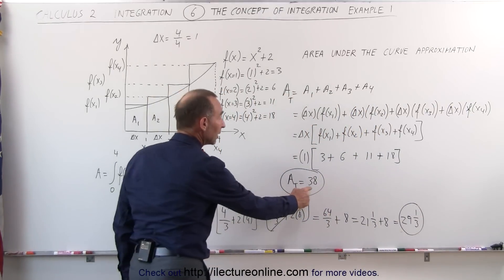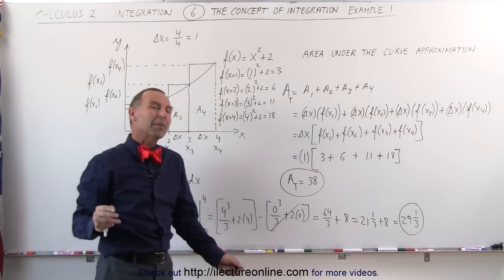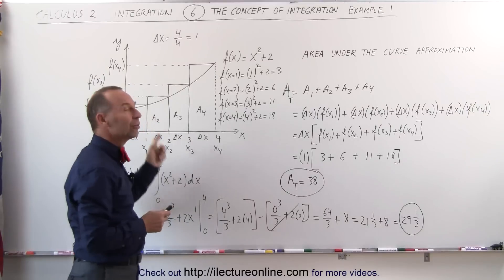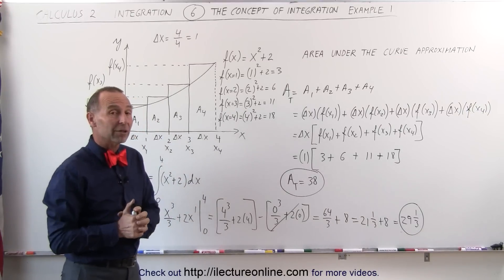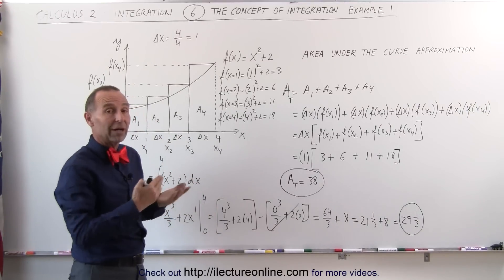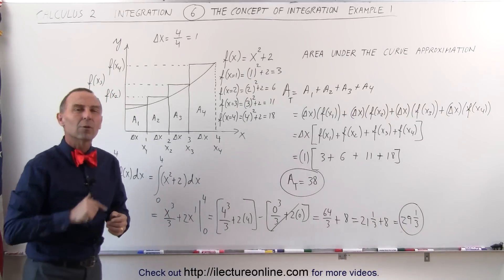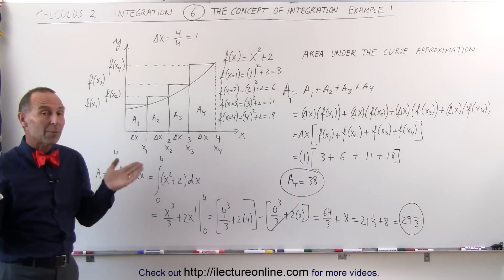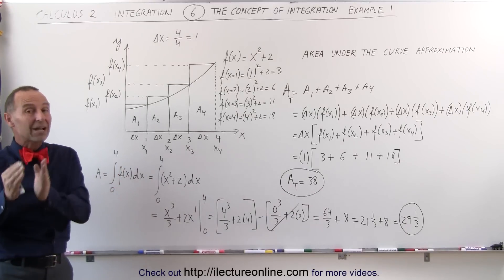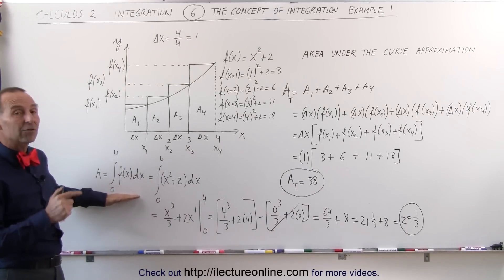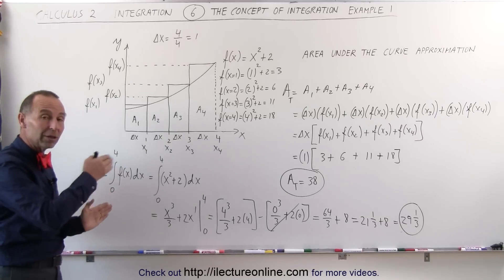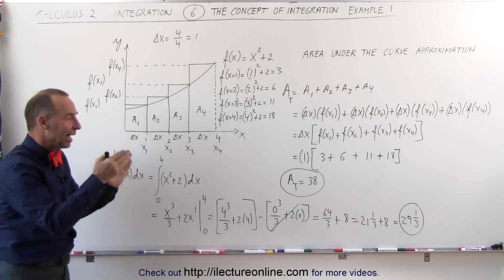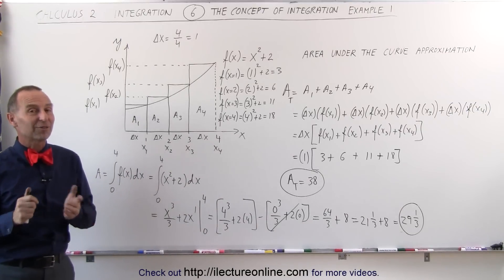The actual area using integration is 29⅓. Notice the approximated area, 38, isn't that far off, but probably a little further than most people would like. In the next video, we actually have a better method to find an approximated value. These techniques are very helpful to understand what integrals are. If you want the actual area, simply take the integral of the function and evaluate it from the lower limit to the upper limit, and you get the exact value of the area.